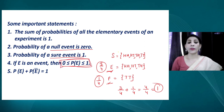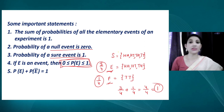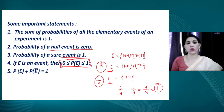An important point: the probability of any event can never be negative. It is always between 0 and 1, including 0 and 1. It cannot be less than 0 or greater than 1.